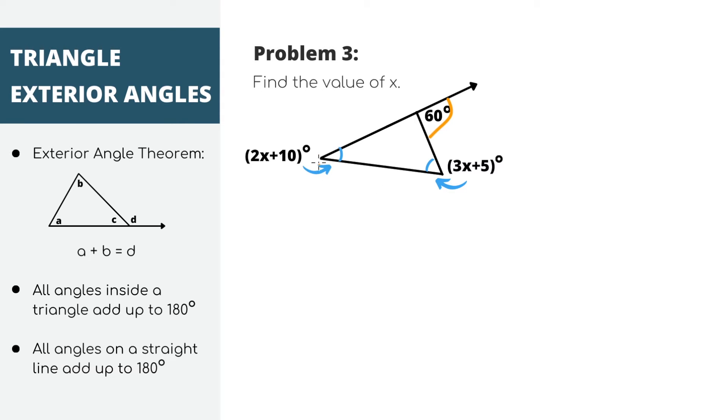And according to the theorem, these two interior angles that are not a part of the tail add up to the exterior angle. So 2x plus 10 plus 3x plus 5 equals 60. Simplifying, we'll get 5x plus 15 equals 60. And x equals 9, which is our final answer.